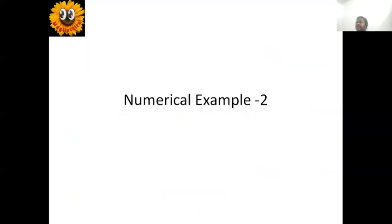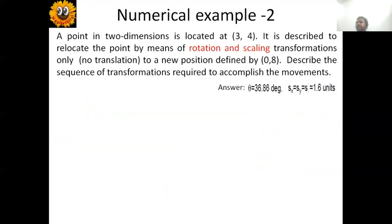Numerical example two: a point in two dimensions is located at (3,4) — that is the initial location. It is displaced to relocate the point by means of rotation and scaling transformations only — no translation is allowed. By means of rotation and scaling, the point is shifted to a final position of (0,8). Describe the sequence of transformations required to accomplish this movement.